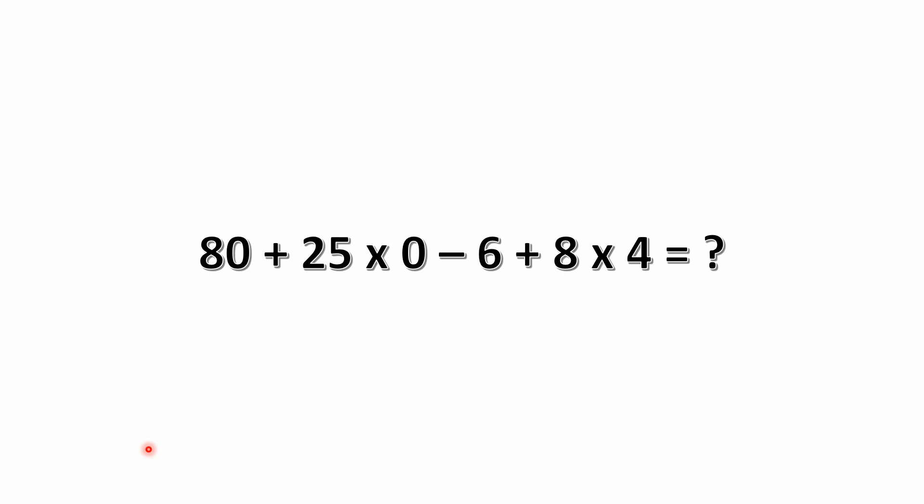It's got multiple operations. We have addition, subtraction, some multiplication involved, and the problem we've got is 80 plus 25 times 0 minus 6 plus 8 times 4.